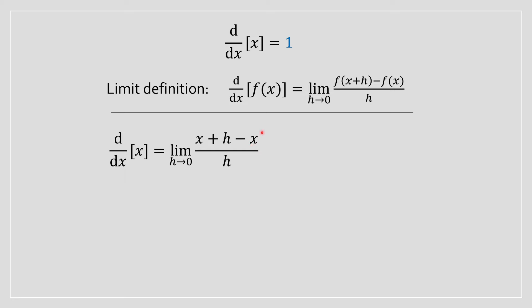Notice we could cancel out the two x's over here. x minus x is just going to be equal to 0x, right? And we're just going to be left with the limit as h approaches 0, h divided by h.